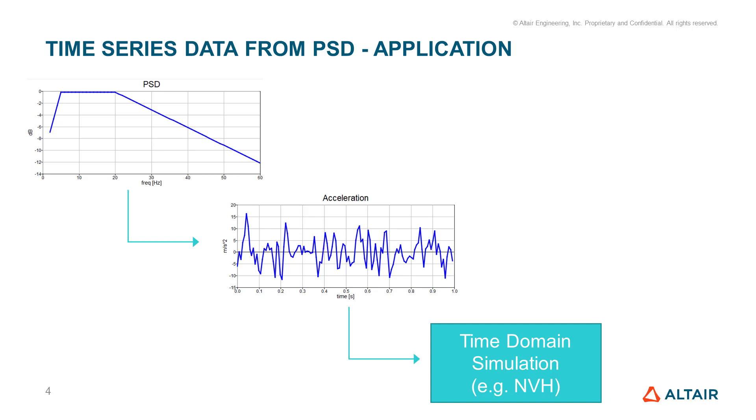The reason is that the power spectral density is representative of the whole random process, while the time signal is just one realization of this random process. And now we can move to the algorithm.